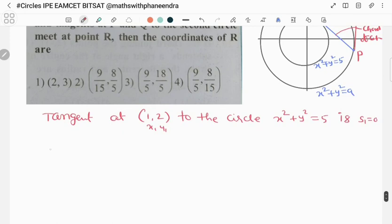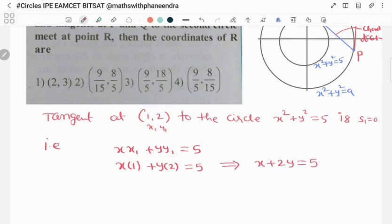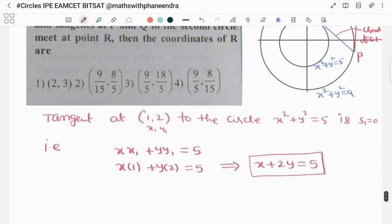s1 = 0, that is xx1 + yy1 = 5. x1, y1 value is (1,2), so x×1 + y×2 = 5. That implies x + 2y = 5. This line, this tangent.